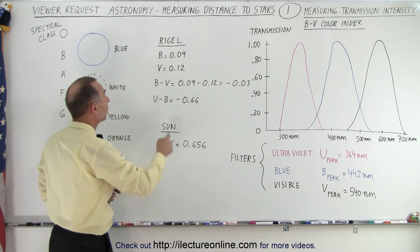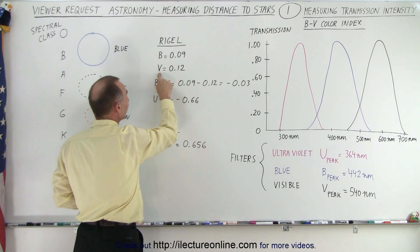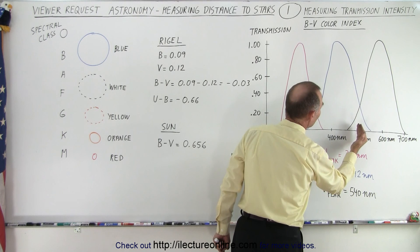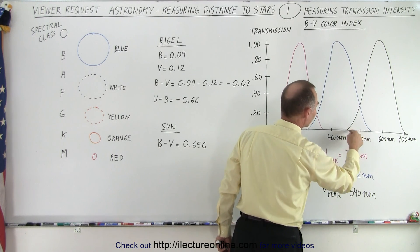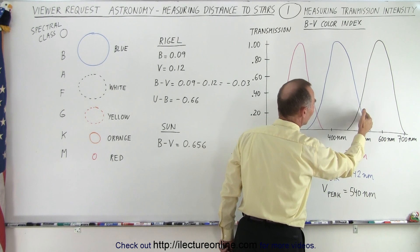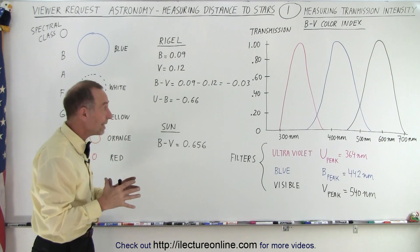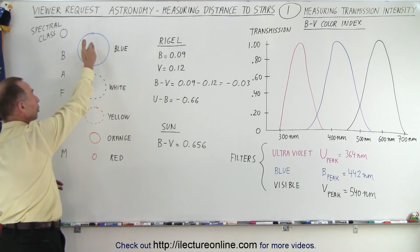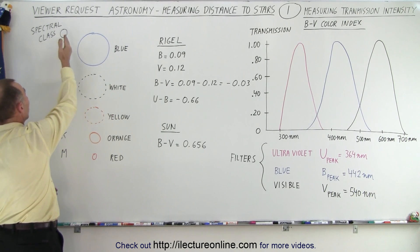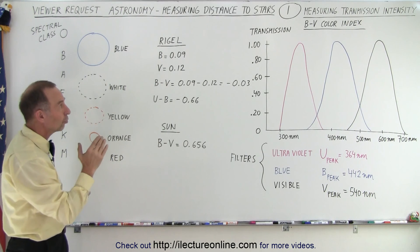B stands for blue and V stands for visible. So we typically use these two filters for stars. And for example, for the star Rigel, we use a blue filter and we notice that 9% of the light is transmitted. Then we use the visible filter and we notice that 12% of the light transmitted. And what that does for us, it gives us what we call a BV index where we can then line up the star as a particular type of star. The whole idea is we're trying to figure out what kind of star we're dealing with. Are we dealing with a blue giant, a white star, a yellow star, an orange star, a red star, or according to the spectra class, an OBAFGKM type of star? What are we dealing with? And we try to establish that using those filters.